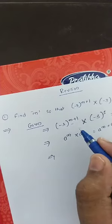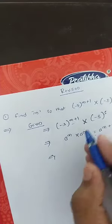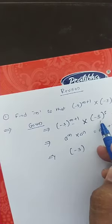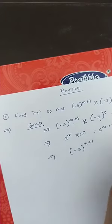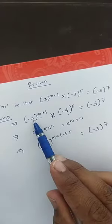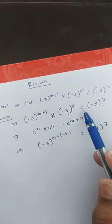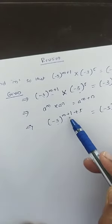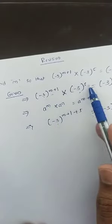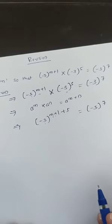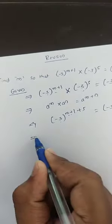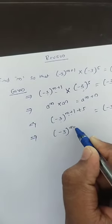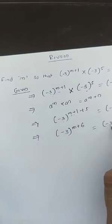See the LHS part. We apply the formula a^m × a^n = a^(m+n). Since both bases are the same, we just add the exponents: that is m+1 plus 5. So we get (-3)^(m+1+5) = (-3)^7. Adding 1 plus 5 gives (-3)^(m+6) = (-3)^7.